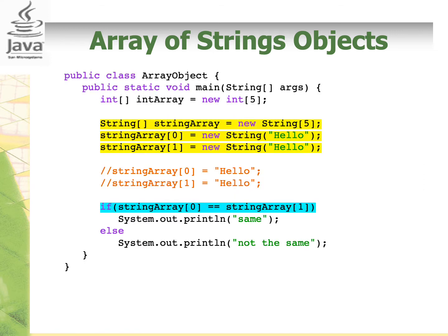To recap again, we have this code: String stringArray equal to new String[5], so the size is 5. At index 0, we create an object of string to have the value 'hello'. Then we create another object of string at index 1 to also have the value 'hello'. What will be displayed if we run this code? If stringArray at index 0 equals stringArray at index 1, does it display 'same' or 'not the same'? It will display 'not the same' because it compares the addresses of the string objects.